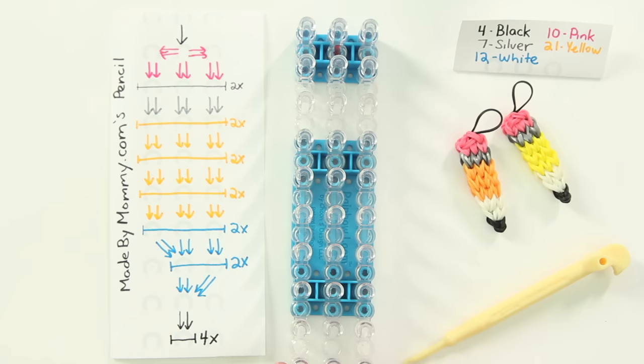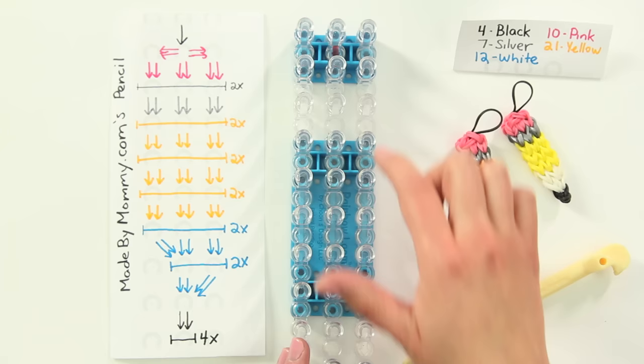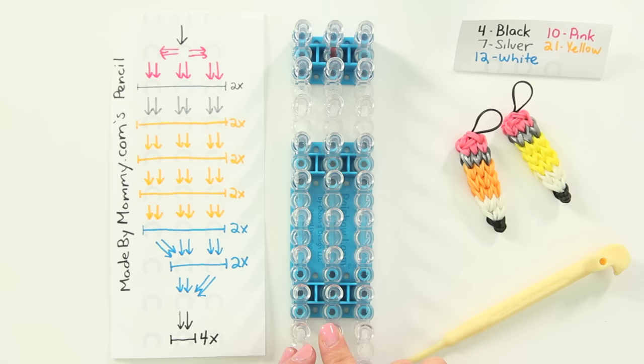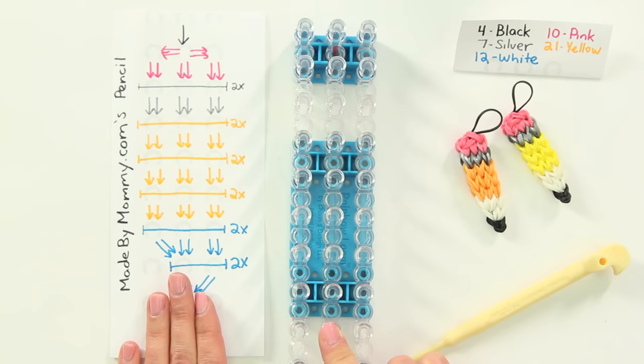To begin with, I want you to check that your loom is configured as mine is. I have the pegs adjusted to be straight across. The arrow is actually up here, pointing downward. We're going to lay our rubber bands this time from the top to the bottom so that it coincides with this chart that will be available for download on madebymommy.com.